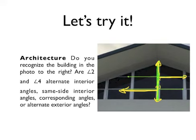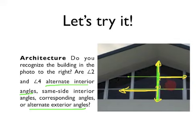Angles two and four are on alternate sides of the transversal. I see two choices that tell me they are on alternate sides of the transversal. And then, where are these two angles in relationship to our two lines? These two angles are between them, right? And since they're between the two lines, that makes them interior. So here we are at alternate interior angles.